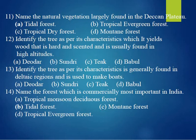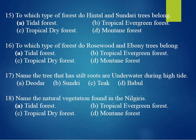Fourteenth question: name the forest which is commercially most important in India. The answer is A, tropical monsoon deciduous forest, where you get teak and sal trees the most. Fifteenth question: to which type of forest do hintal and sundari trees belong? The answer is A, tidal forest. Sixteenth question: to which type of forest do rosewood and ebony trees belong? The answer is B, tropical evergreen forest.